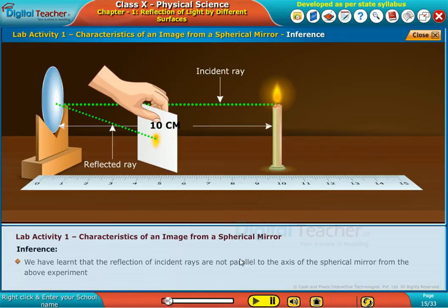From this activity, we have learned that the reflection of incident rays are not parallel to the axis of the spherical mirror from the above experiment.